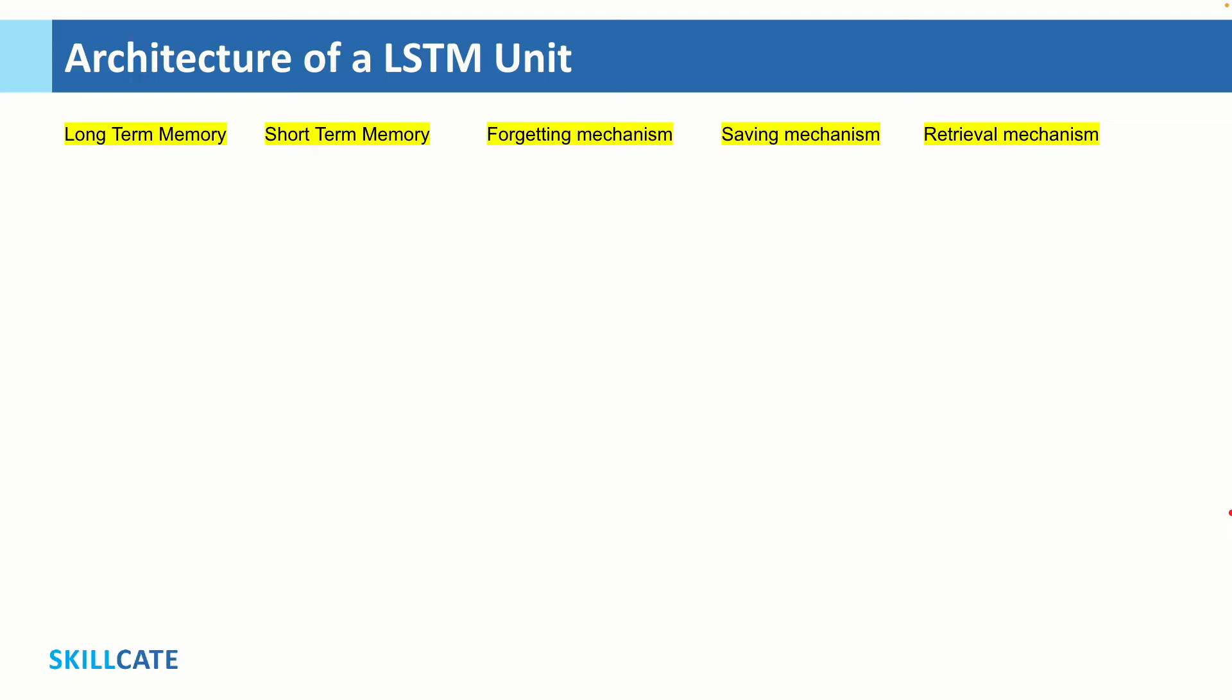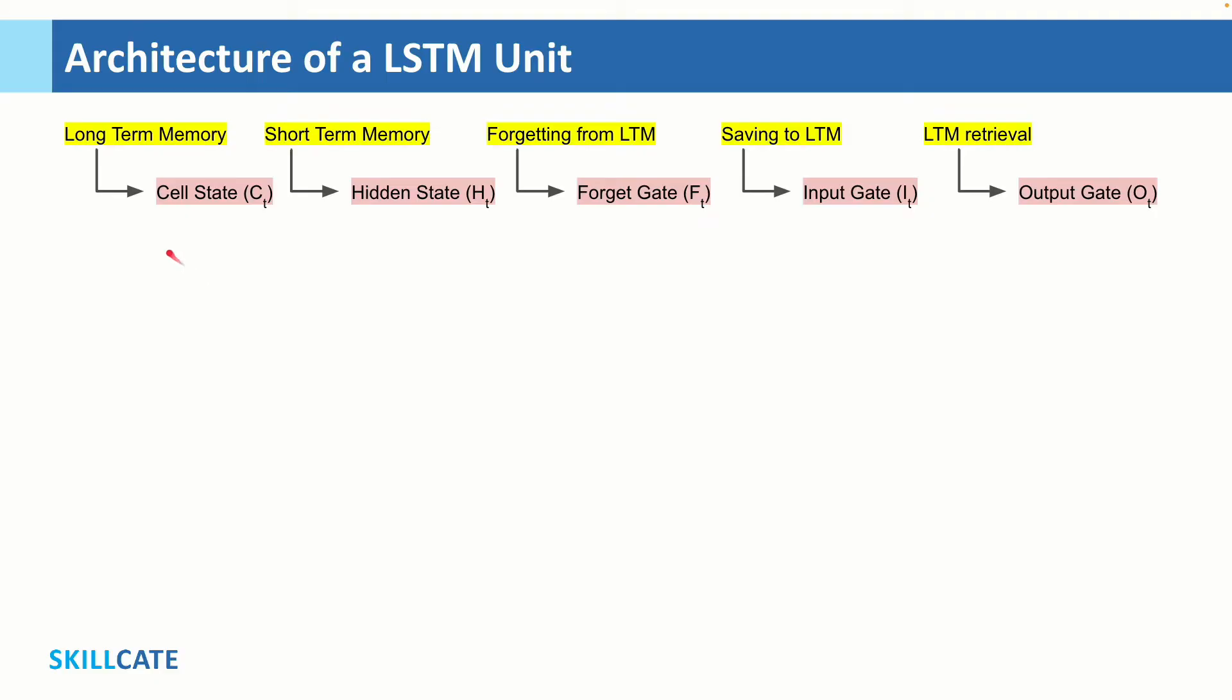All right, that's a lot of stuff for a system to handle. Now, what if I tell you that LSTMs essentially meet all of these requirements to read and comprehend text just like humans? For instance, they have a long term memory called the cell state, a short term memory called the hidden state, a forgetting from long term memory mechanism called the forget gate, a saving to long term memory mechanism usually called input gate, and finally, a retrieval mechanism from long term called the output gate.